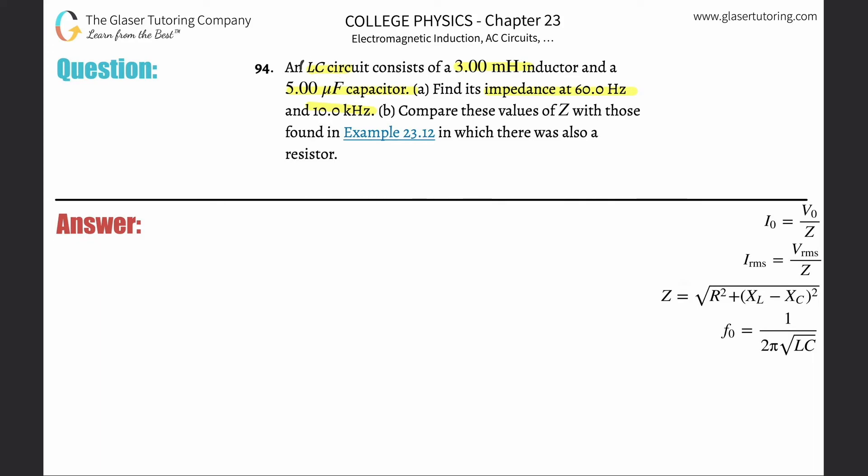So, LC circuit. Notice there's no R in it, therefore there's no resistance. So what that means is that in order to find the impedance here, which is the resistance squared plus the difference between the reactive inductance and the reactive capacitance squared, since there's no resistance, just go... see you later, okay?